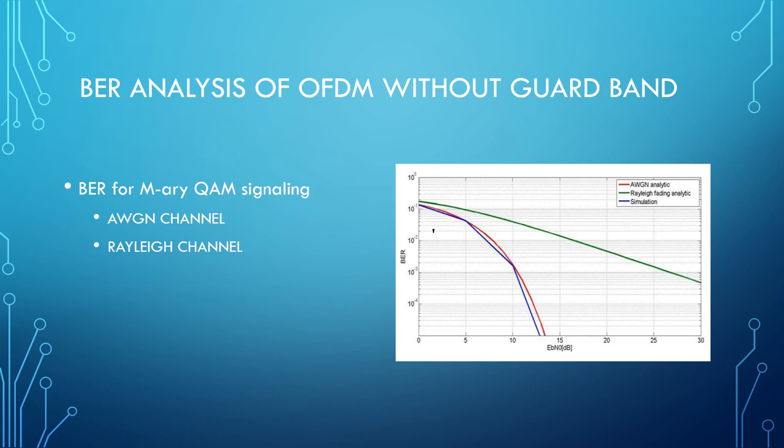As you can see in the graph, the red line that is the AWGN analytic shows that it performs much better than a Rayleigh fading channel because it doesn't take into account real world problems. The bit error rate versus Eb by N0 shows the Rayleigh channel performs a lot worse than the AWGN channel, but this is something that's very near to the real world.